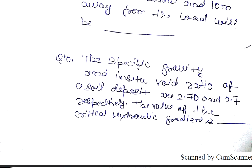Question number 10. The specific gravity and in-situ void ratio of a soil deposit are 2.7 and 0.7 respectively. The value of the critical hydraulic gradient is.